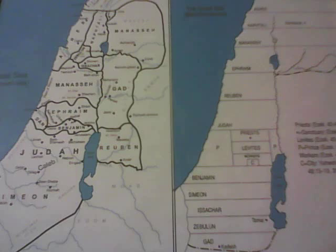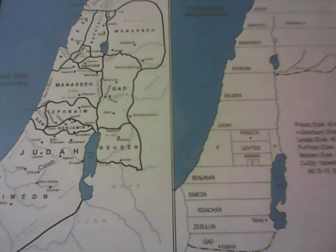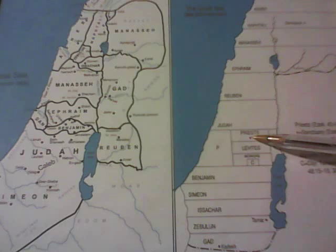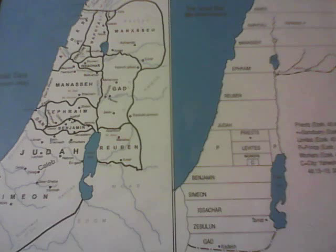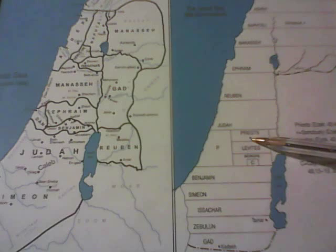Moving now to the sanctuary — Ezekiel 45:2: 'Of this there shall be a square plot for the sanctuary, 500 by 500 rods, with 50 cubits around it for an open space.' We see that the Lord is very particular about His requirements on spaces, designs, and measurements.